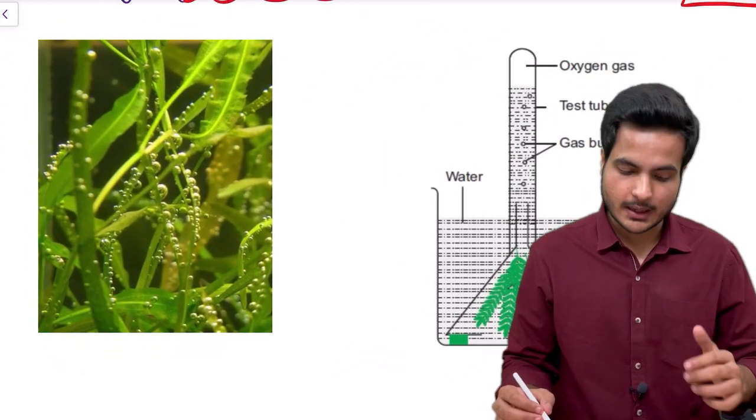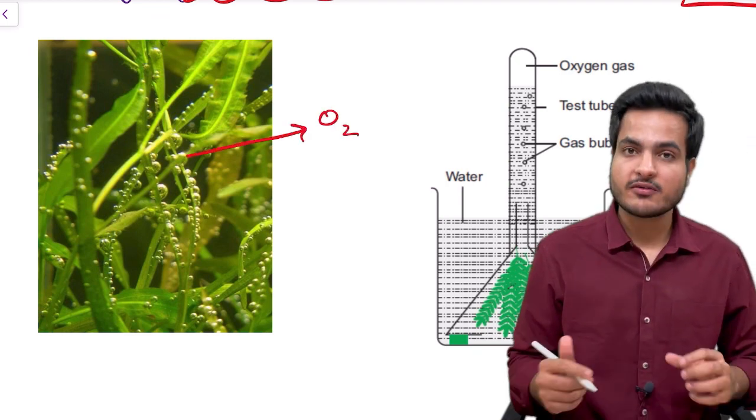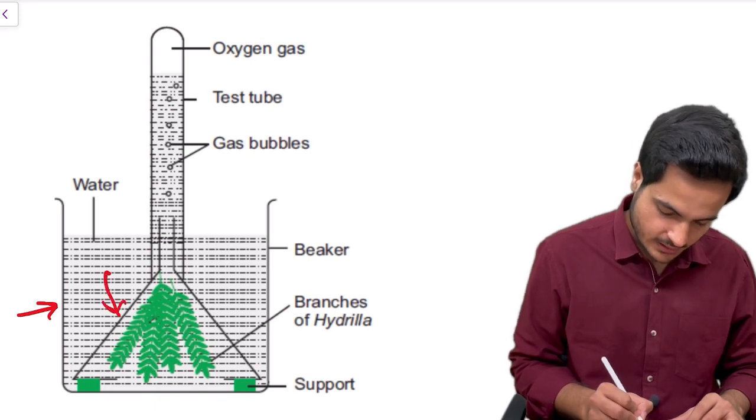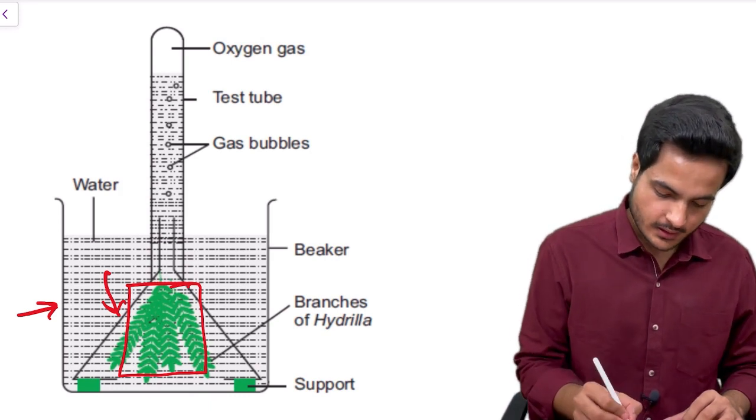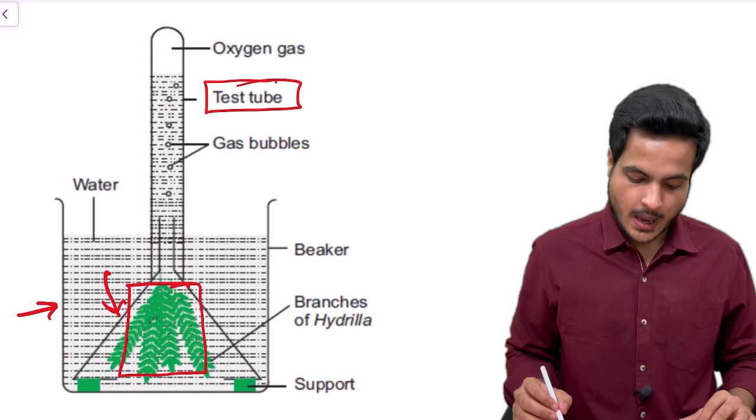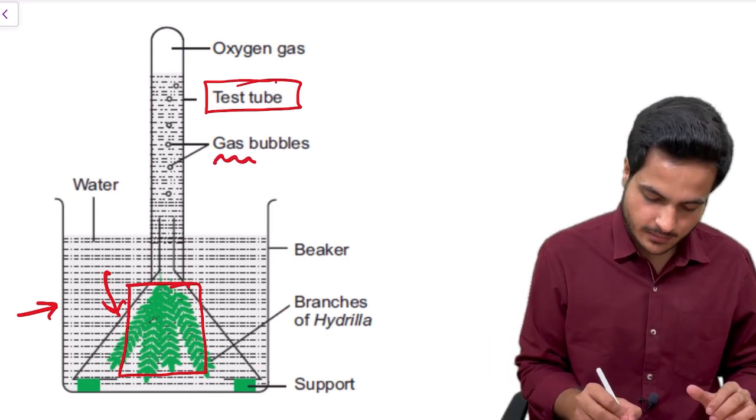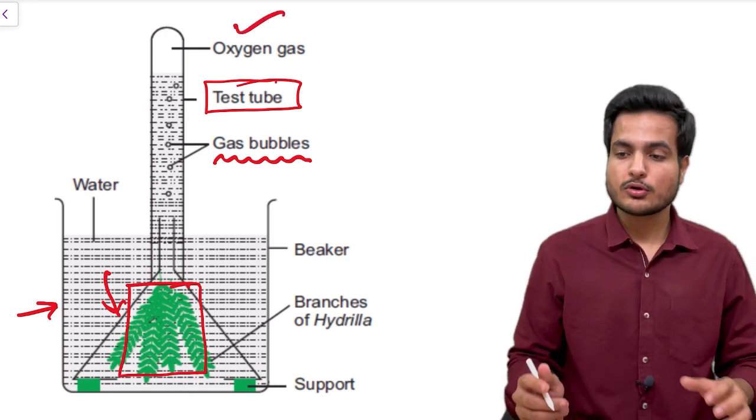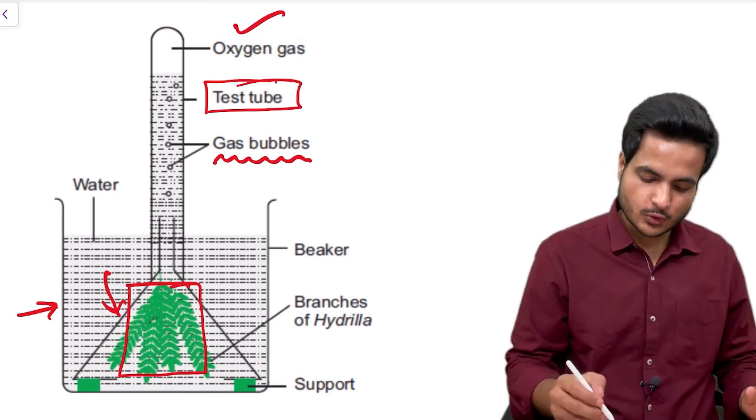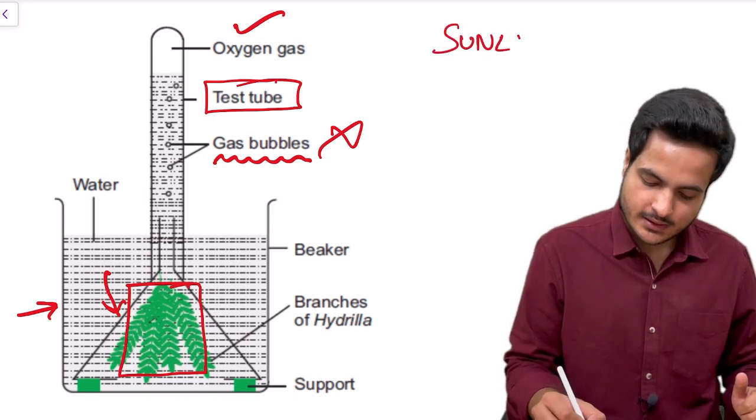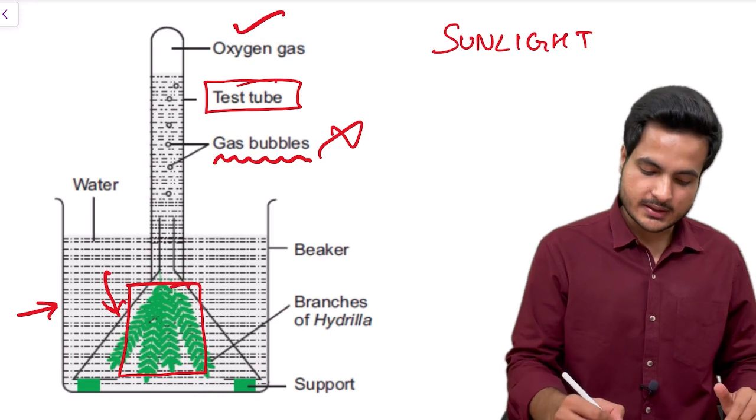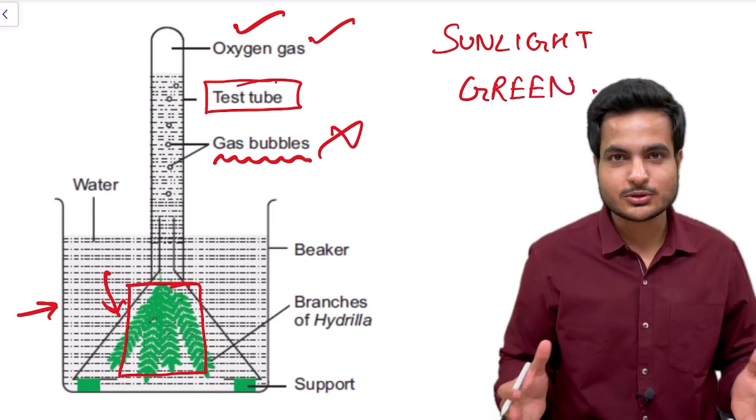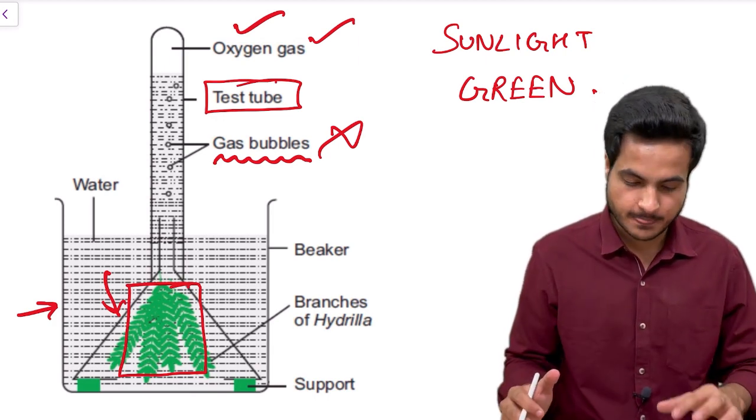Let's study his experiment. He used a beaker filled with water and he used an inverted funnel. In that funnel he kept green plant, and over this inverted funnel he put a test tube. Now when this whole setup was placed in sunlight he could see gas bubbles coming out. And when he did the research he found that these gas bubbles were actually oxygen gas. Now he placed that whole setup in a shady room. There were no gas bubbles formed. Therefore he said that sunlight is very important for this process, and the gas evolved is oxygen gas which comes from the green part of the plant.